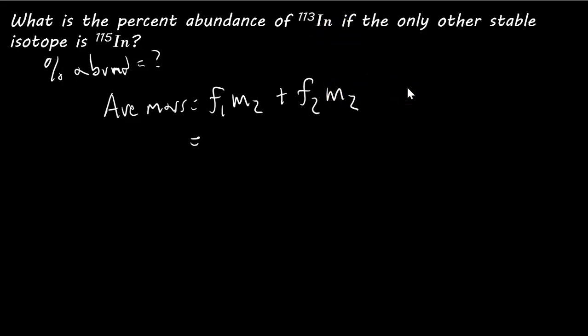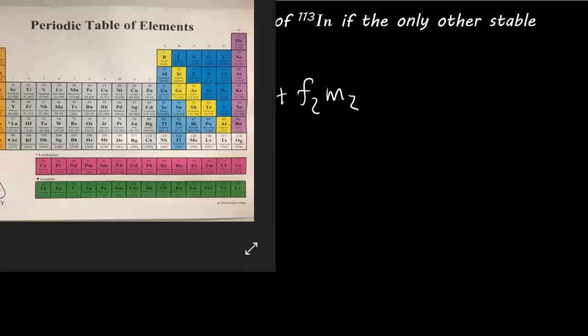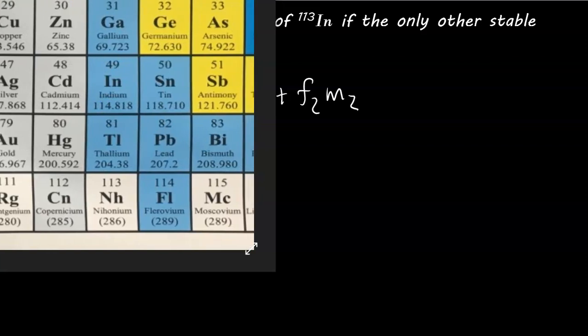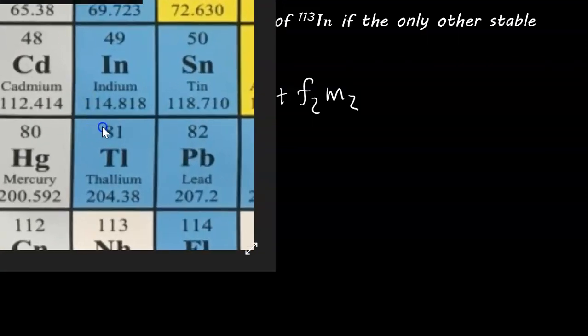Now, we don't know fractional abundances, and we don't have the average mass. We have masses here, but we need to get this average mass somehow. So, to get the average mass, we head off to the periodic table, and I just happen to have one here. Now you've got to find indium. Indium is right over here, so indium has an average mass, average atomic mass of 114.818 u.